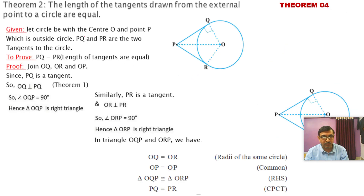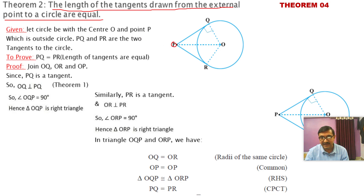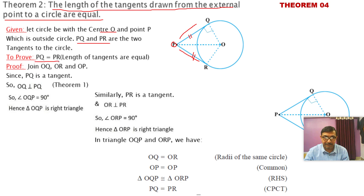Now theorem number four: the lengths of the tangents drawn from an external point to a circle are equal. The external point is P; the two tangents are PQ and PR. We have to prove PQ = PR. Given: a circle with center O; PQ and PR are two tangents. To prove: PQ = PR — the lengths of the tangents are equal.